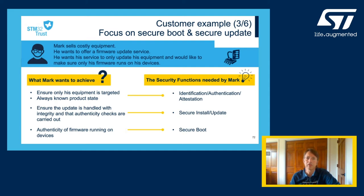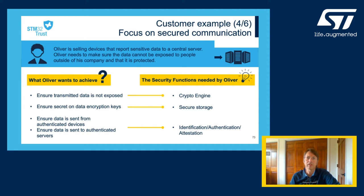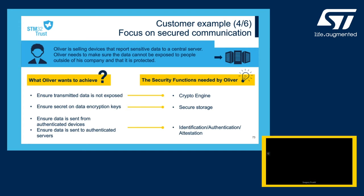Secure communication is our fourth example. Oliver is selling devices that report sensitive data to a central server. He needs to make sure the data is protected and can't be exposed to people outside of his company. He also needs to authenticate devices and enable secure end-to-end data communication between his devices and the central server, and encrypt all communication without exposing the encryption key to guarantee the integrity and confidentiality of the data exchanged.